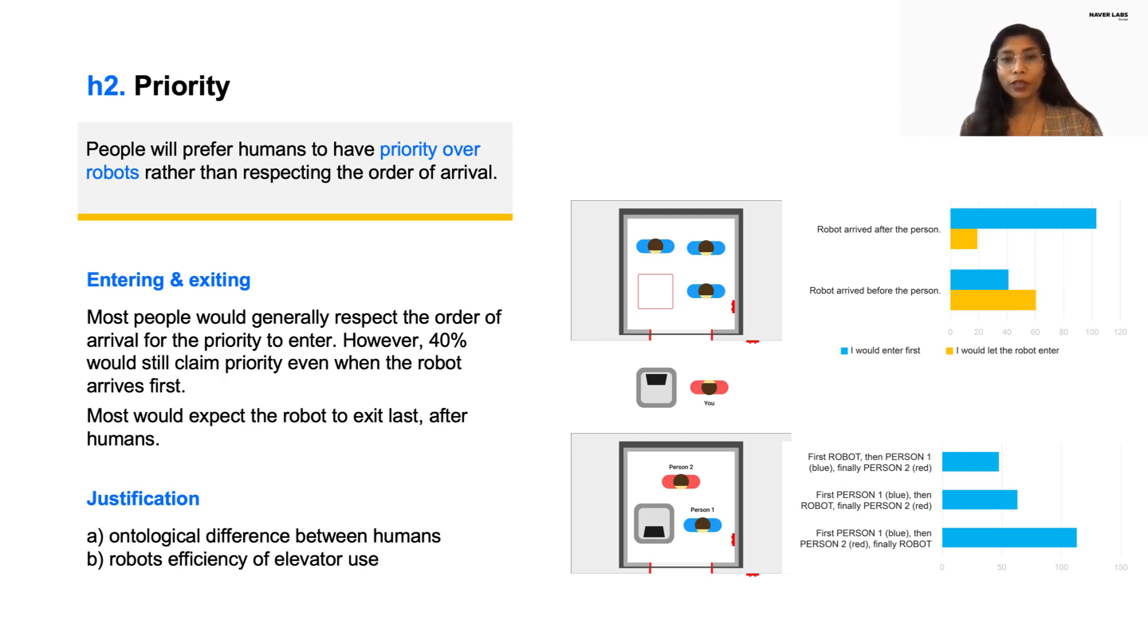When defining priority to exit a shared elevator, 51% expect the robot to exit last, after humans. There are two main reasons for our participants to give priority to humans. One is the ontological difference between humans and robots, and the second is related to the efficiency of elevator use. There is an assumption that the robot will be slow, and it will be more efficient to let the humans move first, giving the robot more space and time to perform the movements.